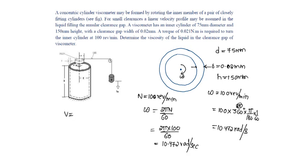V equals omega times r, r omega. R is 75 by 2 times 10 power minus 3 meters times 10.472, that will be equal to 0.39 meters per second.